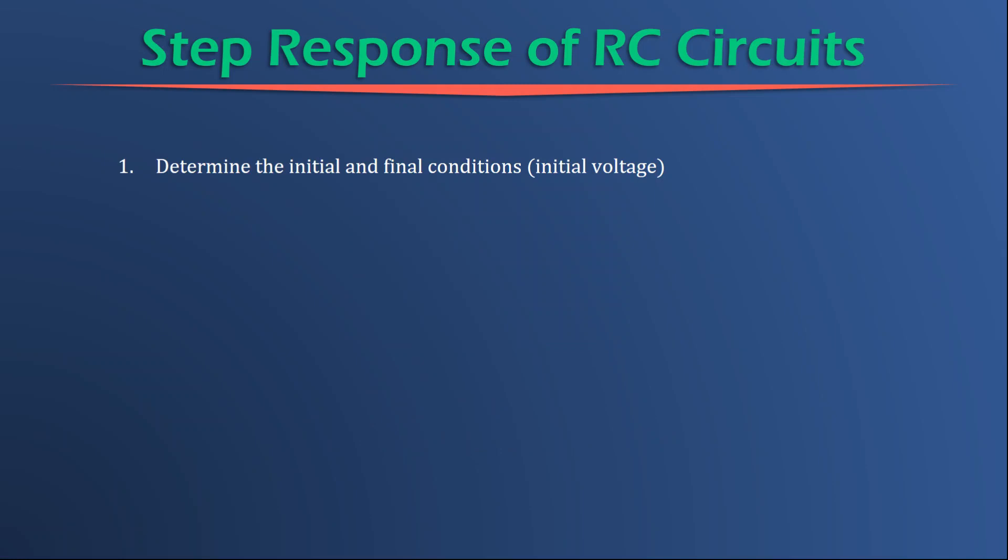So the procedure when dealing with the step response of RC circuits: determine the initial voltage, the voltage at T equal to zero negative, which is equal to the voltage at T equals zero positive, and that's going to give us V zero. Step two, determine the time constant. Back to step one, before we get to step two, we also have to determine the final conditions. The final condition is V of infinity. So what is the voltage at time T equals infinity?